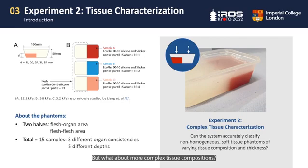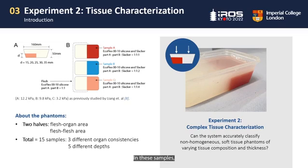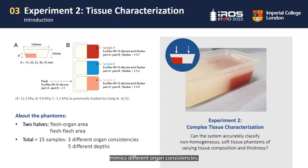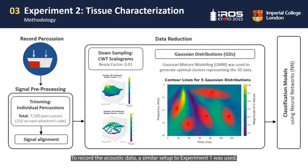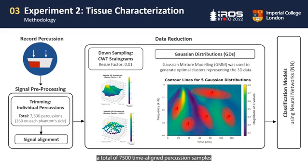But what about more complex tissue compositions? For our second experiment, we made 15 different silicon phantoms containing a flesh-organ half. In these samples, the white silicon represents the flesh or abdomen and the colored silicon mimics different organ consistencies. The thickness of the organ layer in these samples also varies from 15 to 35 mm. A similar setup to experiment 1 was used to record acoustic data. After preprocessing the recordings, a total of 7,500 time-aligned percussion samples were obtained, with each half of the phantoms being percussed 250 times.